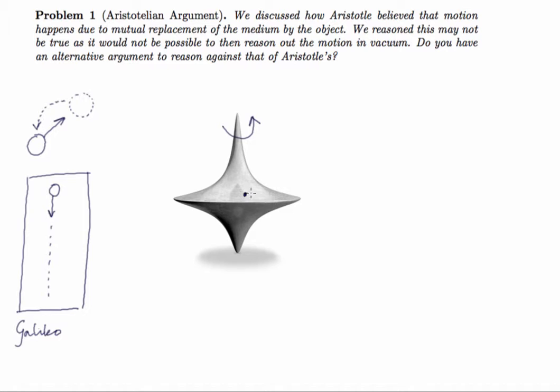And note that the volume of the medium which the spinning top occupies remains the same. There is no replacement of the medium happening by the spinning top, yet the motion is possible. So, this is an alternative argument against that of Aristotle's.